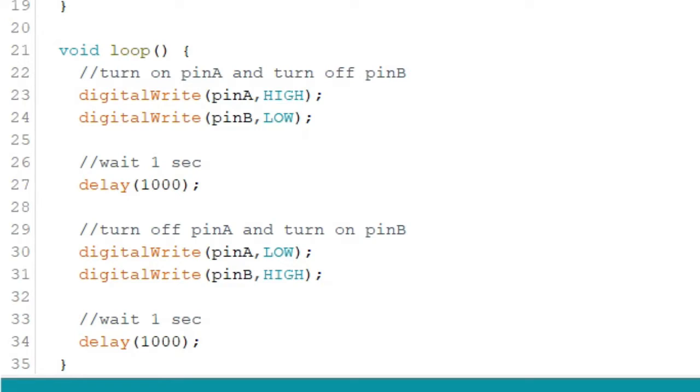To do that, we simply type in delay(1000);. Again, 1000 is for 1000 milliseconds or one second. So, after we wait for one second, we now turn off LED1 by typing digitalWrite(pinA, LOW) and digitalWrite(pinB, HIGH).